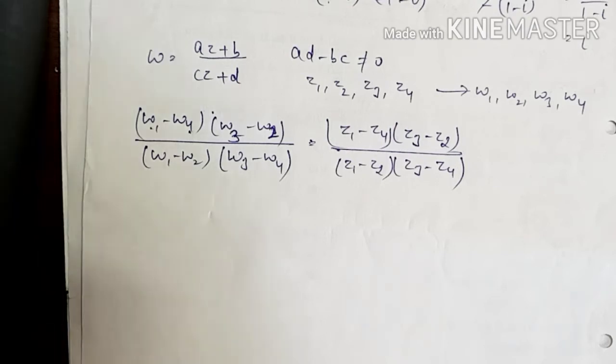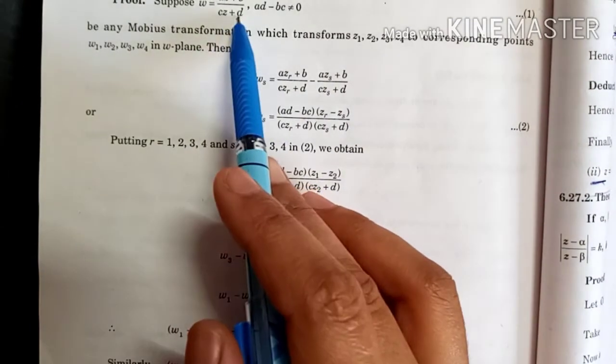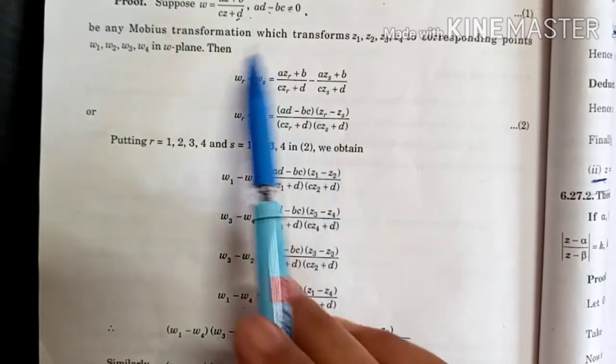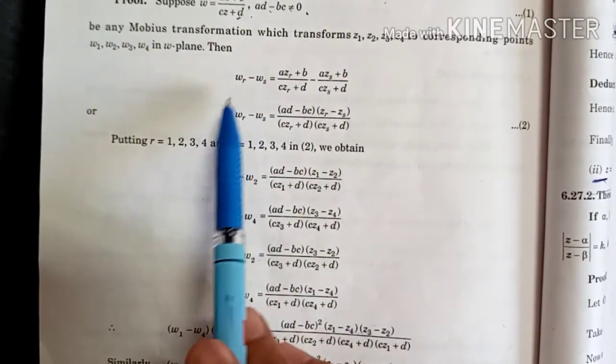Now see, this proof is what we need to do. W has a transformation given where AD minus BC is non-zero. This is the Möbius transformation. So first of all, let's start.